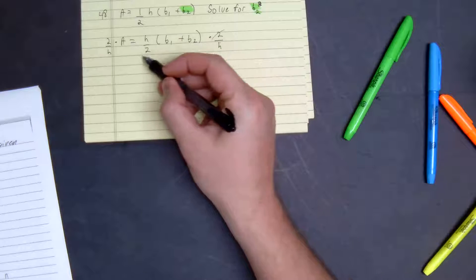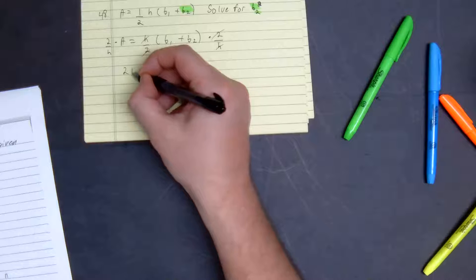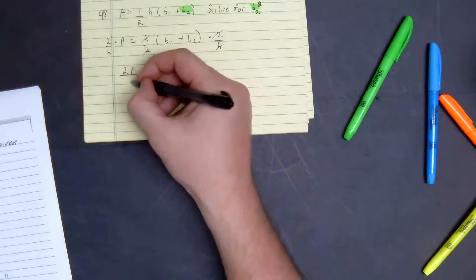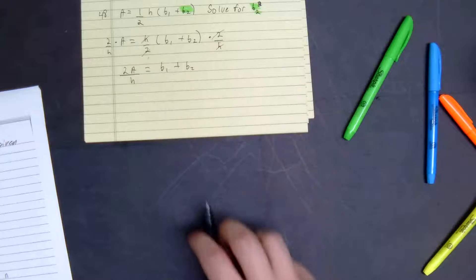What this does, the twos cancel, the h cancels, so you get two a. So two times the area divided by the height is equal to base one plus base two.